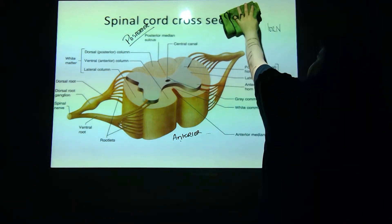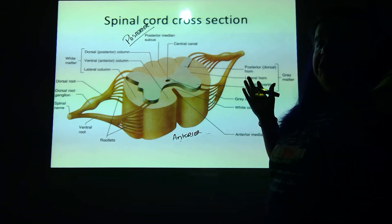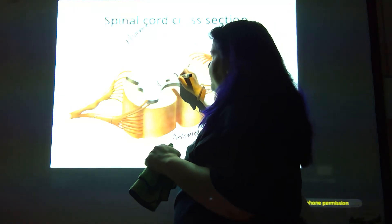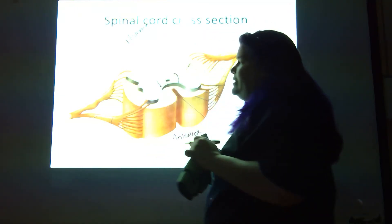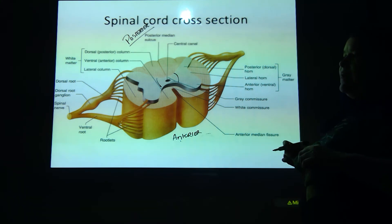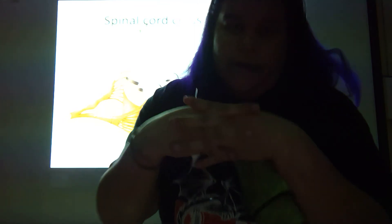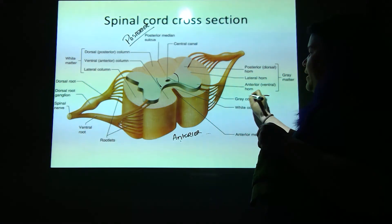So we've got the butterfly horns done. Do you see this little piece of gray matter that connects the two wings together? That little piece of gray matter is where they come together — I always think of the word commiserate. That area of gray matter that actually connects the two wings is called the gray commissure. They come together, so you've got the gray commissure.